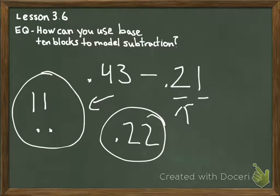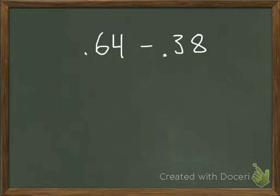And here that is with the base 10 blocks. That last one was a fairly simple operation, since we didn't have to regroup at all. But now, if you look at this example: 64 hundredths minus 38 hundredths.